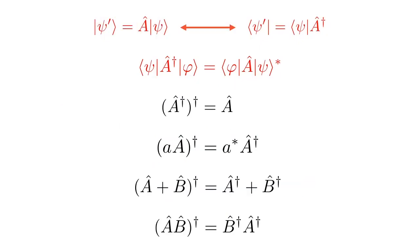What I want to do in the rest of the video is to use, first, the relation between the state space and the dual space, and second, the relation between the matrix element of the adjoint operator and the original operator as shown here, to prove these four relations that we have down here.